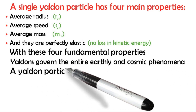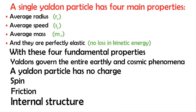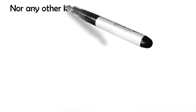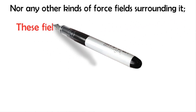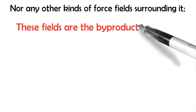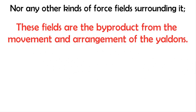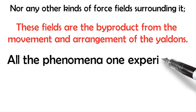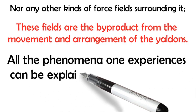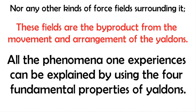A Yaldon particle has no charge, spin, friction, internal structure, nor any other kinds of force fields surrounding it. These fields are the byproduct from the movement and arrangement of the Yaldons. All the phenomena one experiences can be explained by using the four fundamental properties of Yaldons.